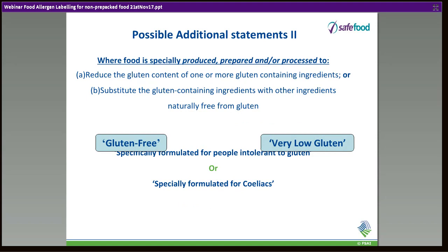The permitted terms are: 'gluten-free' or 'very low gluten.' Additionally, for gluten-free you can say 'suitable for people intolerant to gluten' or 'suitable for coeliacs.' For very low gluten, you can also say 'specifically formulated for people intolerant to gluten' or 'specifically formulated for coeliacs.' These are the only permitted phrases.